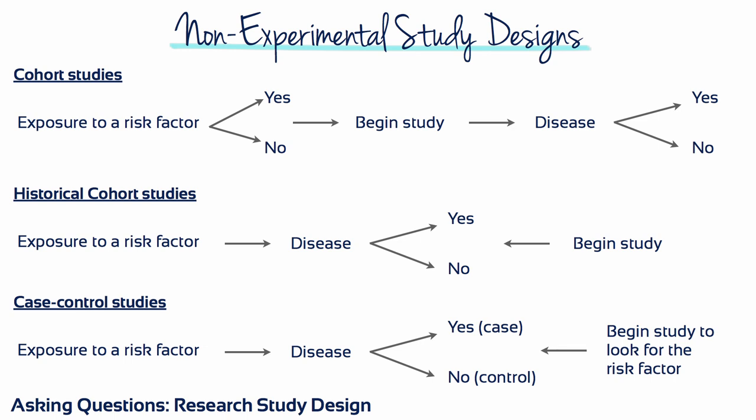In a historical study, both the exposure to the risk factor and the disease status are known, and the researcher uses historical data to define a risk group. One might ask what percentage of the people in the study that are known to have a disease had the risk, compared to the percentage of people who did not have the disease. This is a retrospective study.